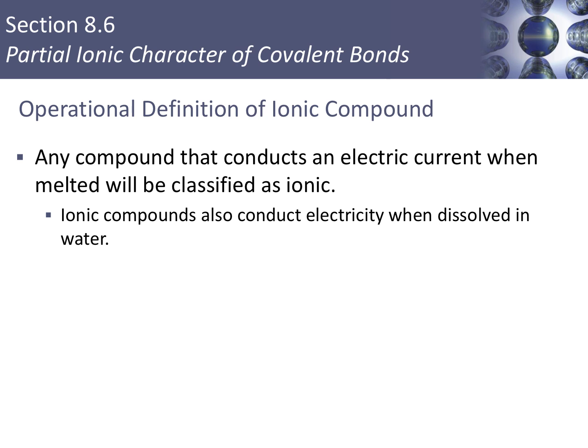We can also add to our ionic compound definition in terms of electrical conductivity. Any compound that is melted or molten and conducts electrical current is an ionic compound, because we have cations and anions that are free to move around. Also, when ionic compounds are dissolved in water, they can conduct electrical current as well — remember back to chapter 4 when we talked about strong electrolytes and weak electrolytes.